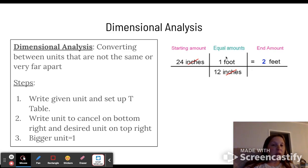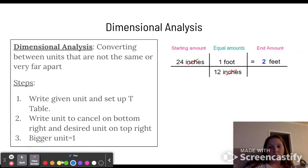This is what a dimensional analysis problem looks like. We were given 24 inches, we want to figure out how many feet that is. We write our 24 inches and set up our T table. The unit we want to get rid of goes on the bottom right, so inches go there. We want to go to feet, so that goes up top. You multiply the numbers on the top and divide by the number on the bottom: 24 times 1 is 24, divided by 12, which gives you 2 feet.